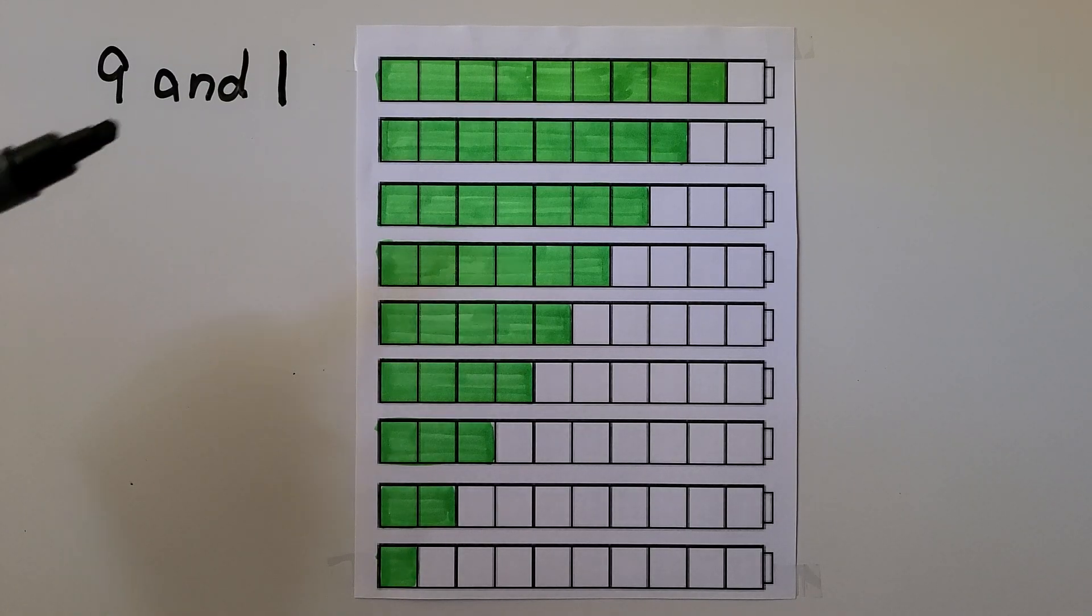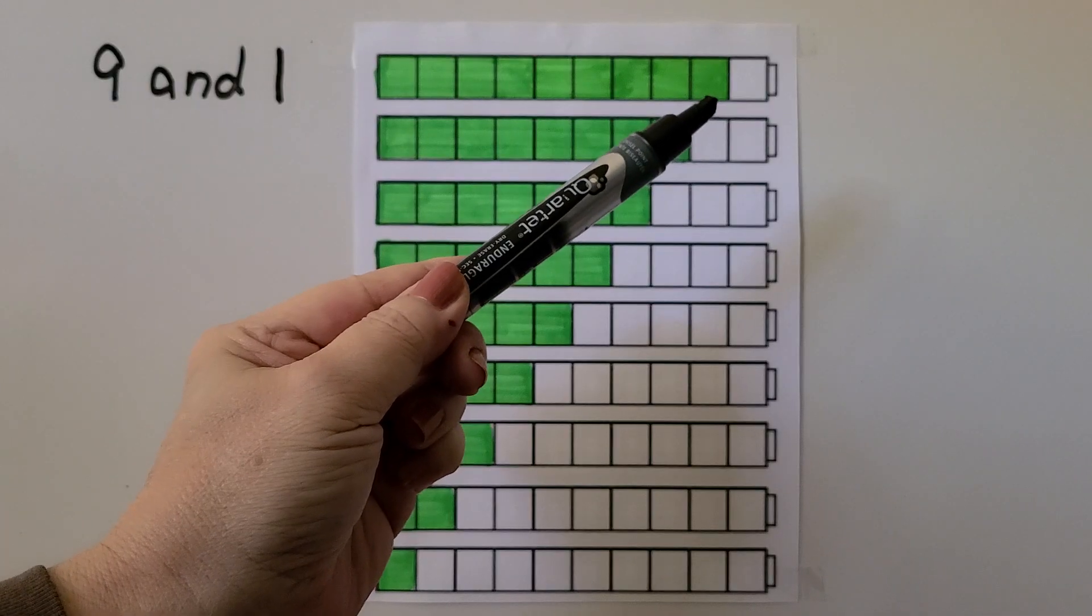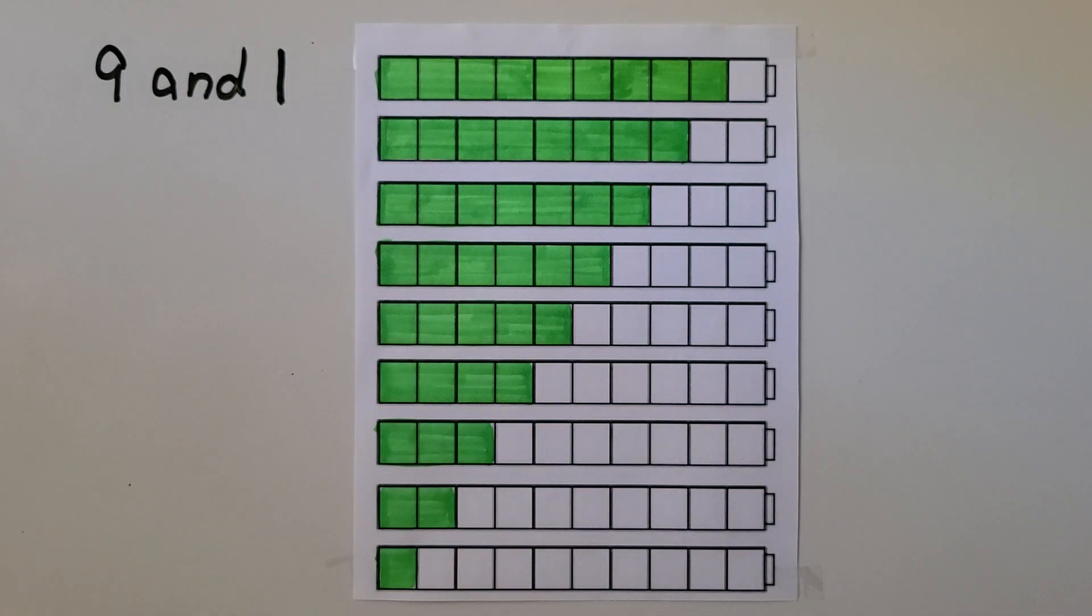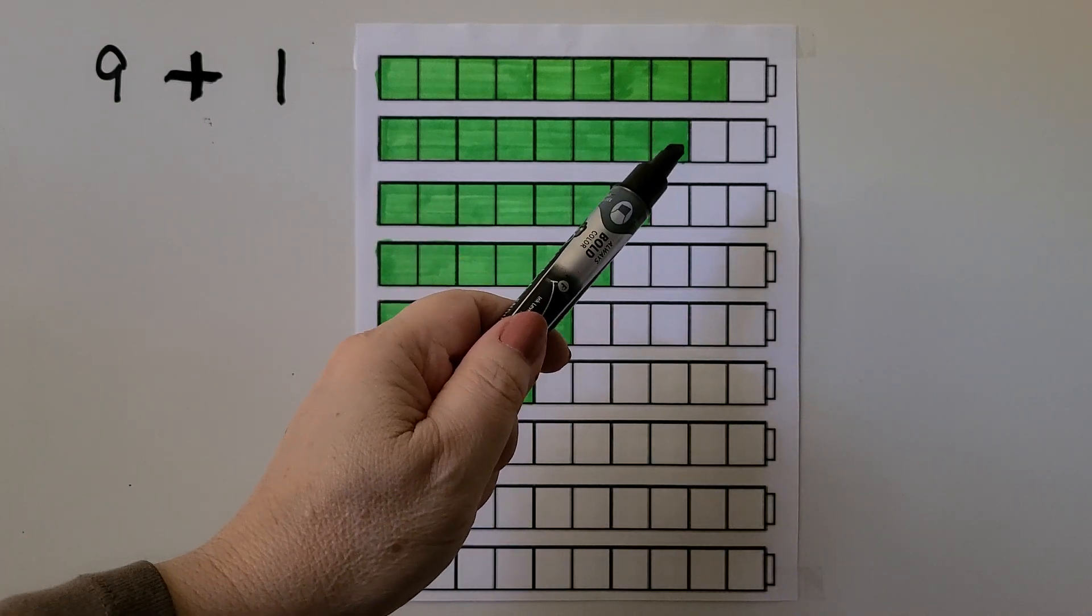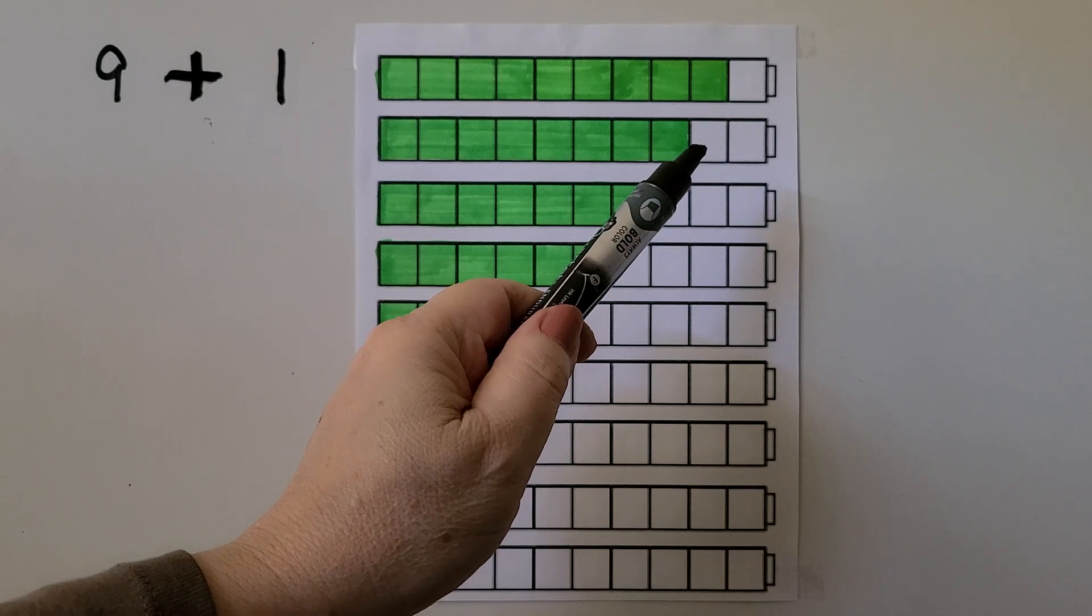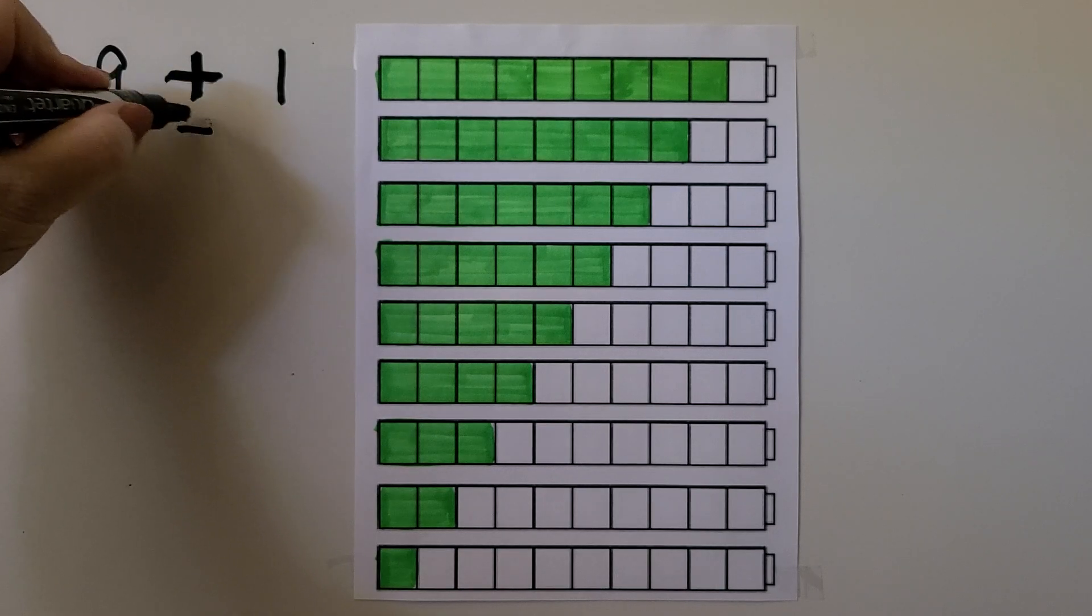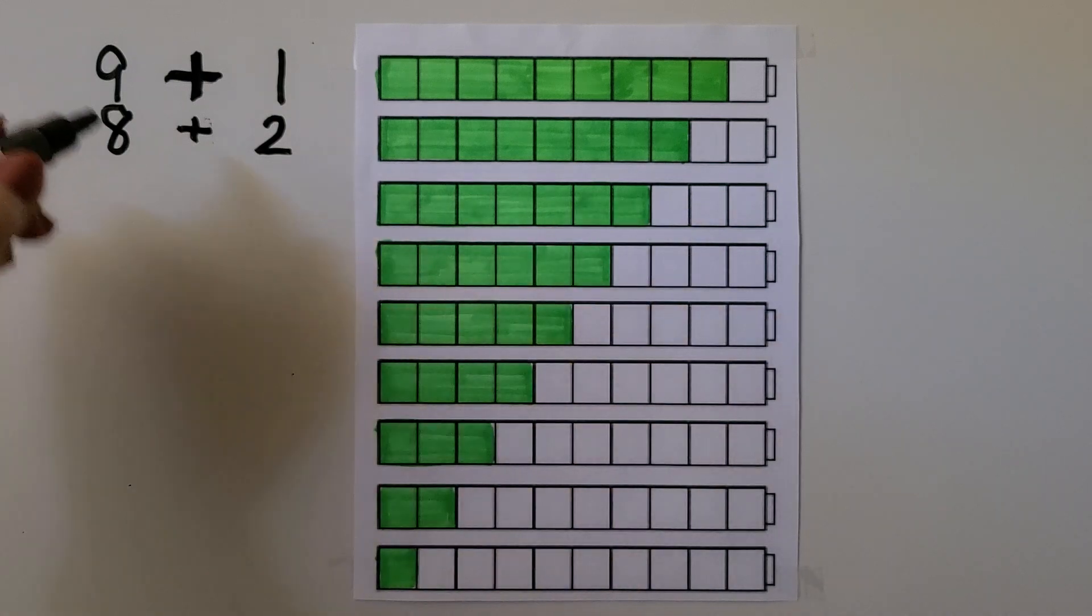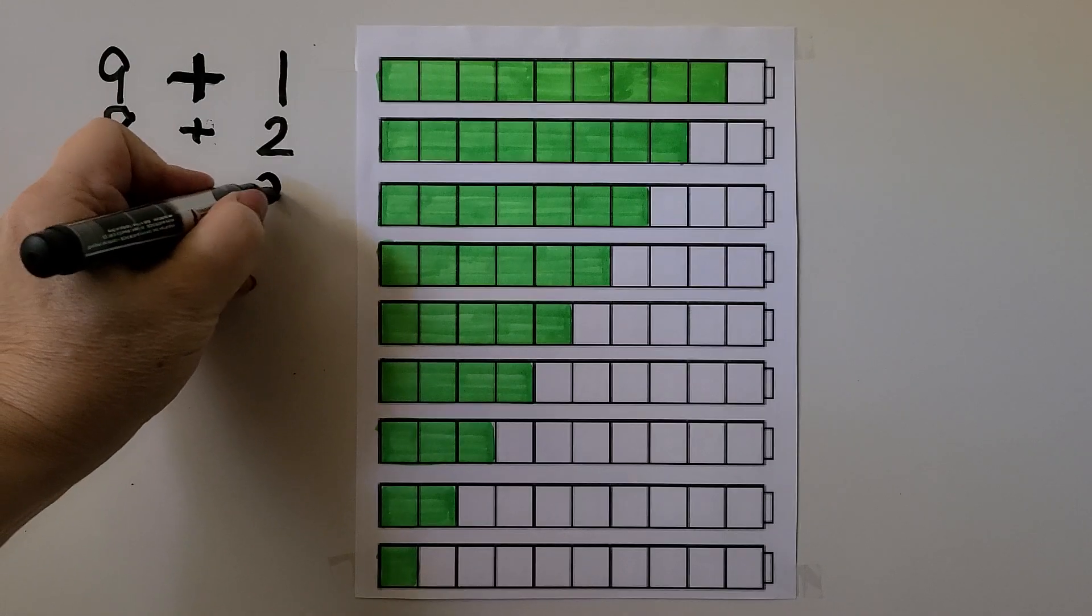Here we have cube trains with 10 cubes. We have 9 that are green, we would have to color one more to make a 10. That would be a 9 and a 1, nine plus one. Here we have one less green one and it has one more white one. That means we have 8 green plus 2 white. Here we have one less green, one less than 8 is 7, so we have a 7 and we add a 3 to make a 10.